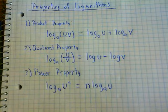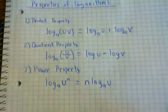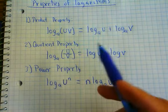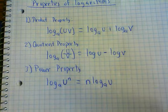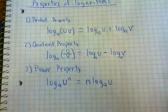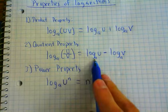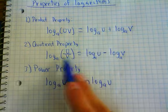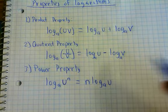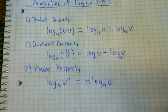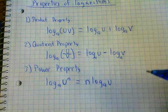Number two is the quotient property — quotient means division. We have a logarithm with some base where two things are being divided. You can split it into multiple logarithms: log base A of the numerator minus log base A of the denominator. It doesn't have to be just two terms divided — we could have several things going on. This is the most basic example, and we're going to try a few of these to make sure you understand them.